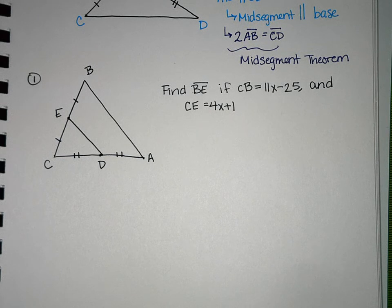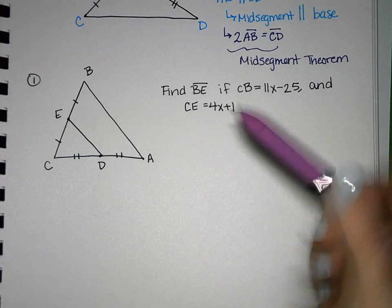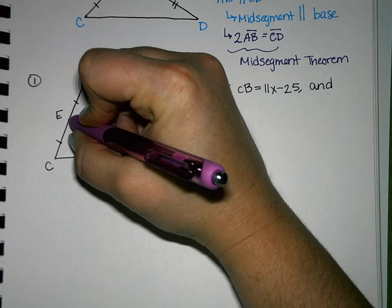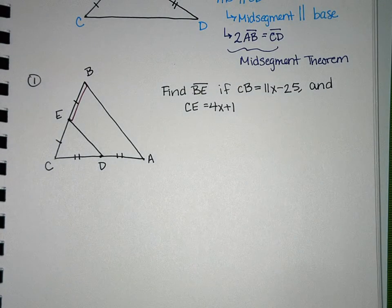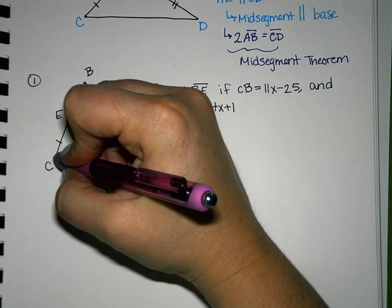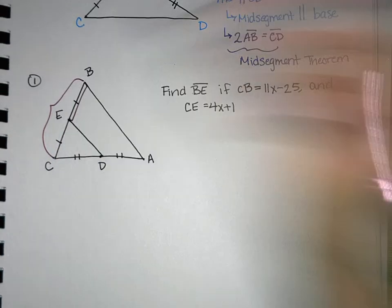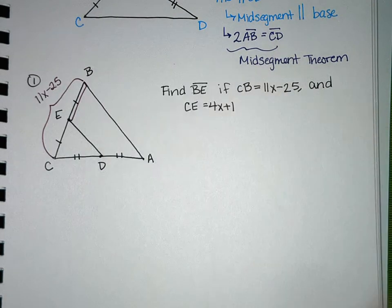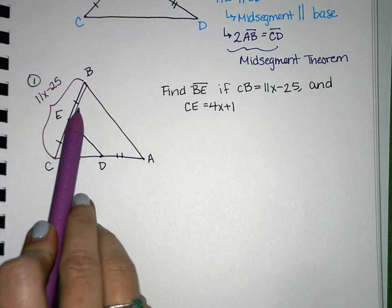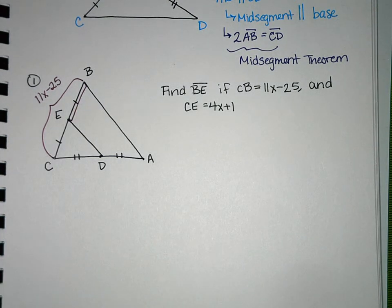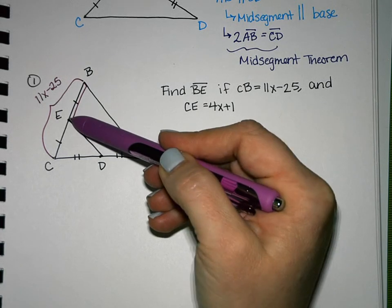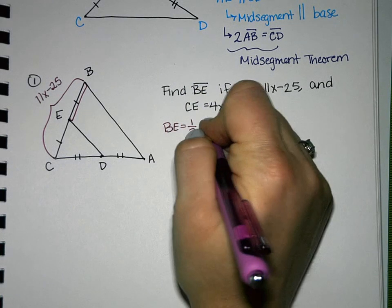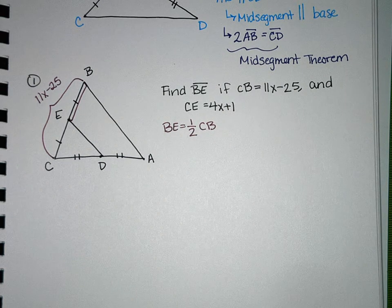So the first thing that I look at is my relationship for the information I know. So I'm trying to figure out the length of BE. So this is BE, and I'm told that CB, this whole length is 11X minus 25. So what's the relationship between BE and CB? It's half. Because E is the midpoint, so I know that BE is equal to one half of CB. So I'm just going to write that down so I remember that.